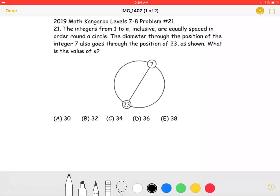This is the 2019 Math Kangaroo Level 7-8, problem number 21. The integers from 1 to n, inclusive,